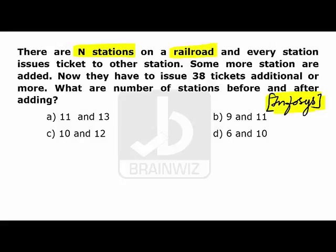Every station issues a ticket to the other stations. If some more stations are added, then the station master has to issue 38 additional tickets. So what are the number of stations before and after adding?